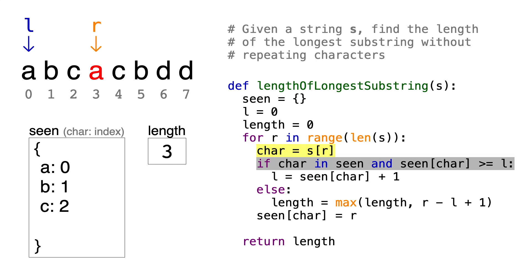Now for the next iteration, the character is A. Now we have seen this character before, and its last known index, 0, is greater than or equal to the left pointer's index, which is also 0. This means that the character A is repeated in the substring, so we'll have to move the left pointer up.